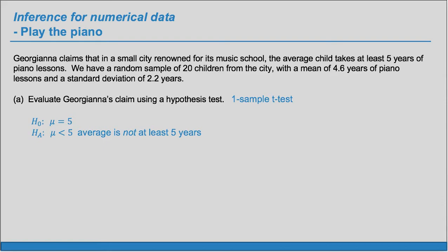The true average number of years of piano taken in this city. The null claim implicitly is that it's at least — meaning greater than or equal to — but we always write our null claim as an equals. So the null claim is that mu equals five. We'll set our alpha to 0.05, our significance level.